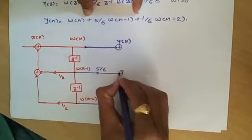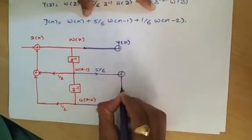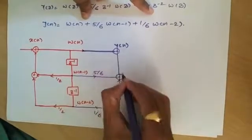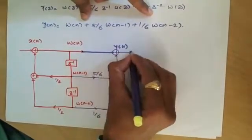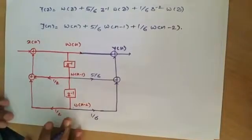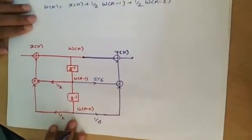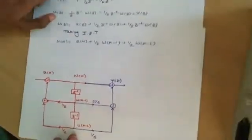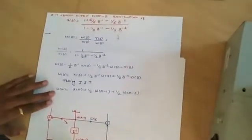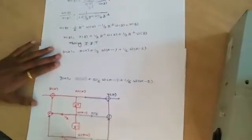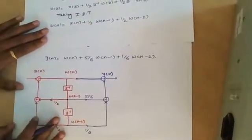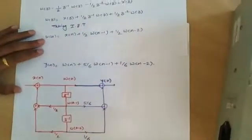We add two more adder elements to sum these terms, and the final output is y(n). This completes the Direct Form II realization of the given transfer function. Notice that the delay elements are shared between the all-pole and all-zero sections — this is the key advantage of Direct Form II.